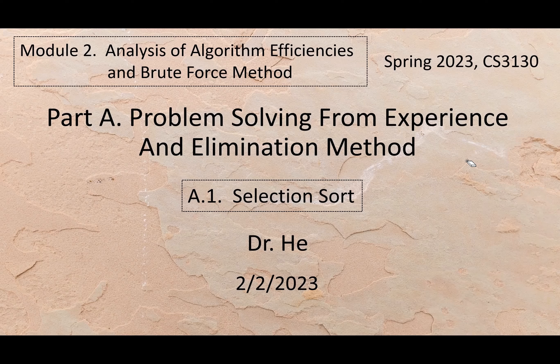Welcome to the analysis of algorithm efficiencies and the brute force method — two topics. For algorithm efficiencies, we will introduce some asymptotic notations, which are pretty abstract, but we need to use those notations to describe efficiencies. For the brute force method, today we will use it to solve a problem — problem solving from experience and the elimination method. Section 8.1: Selection Sort.